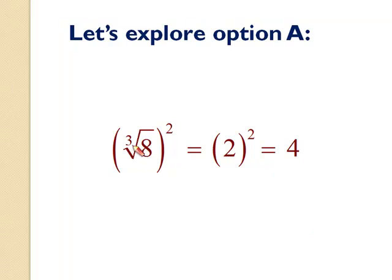So when we actually evaluate this, the cube root of 8 is 2. Two squared is 4, right? Remember, this is asking you what number multiplied by itself three times gives you 8. That answer is 2, then two squared equals 4.